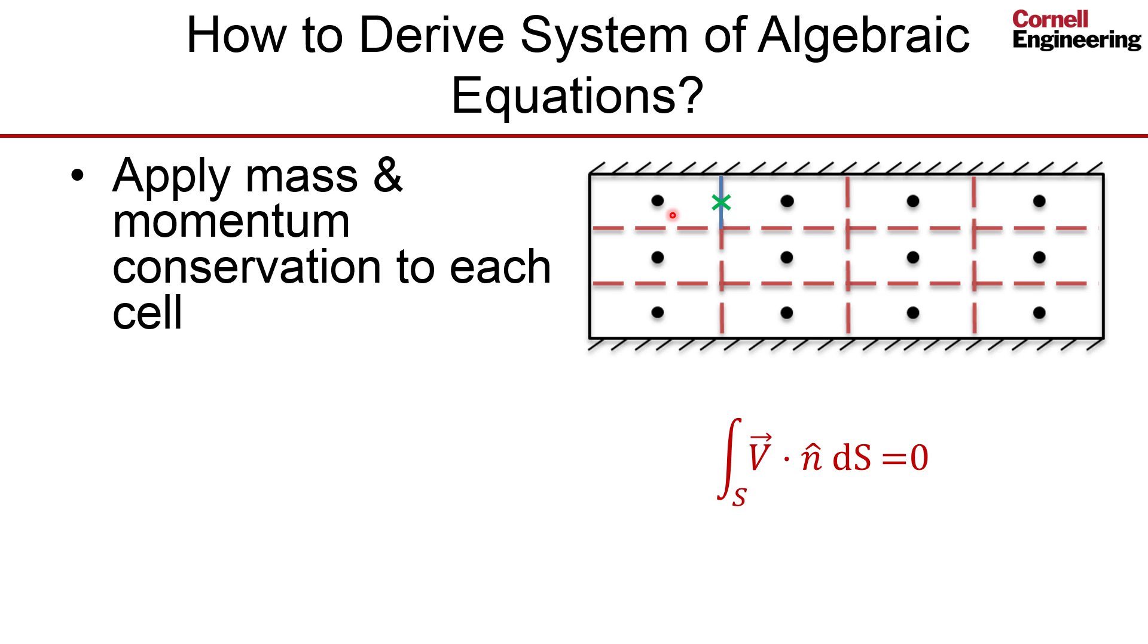Similarly, I have to do it for x-momentum and y-momentum. So I'll get three discrete or algebraic equations per cell. And I'll have a total of 36 equations, because I have 12 cells. So 36 equations, 36 unknowns.